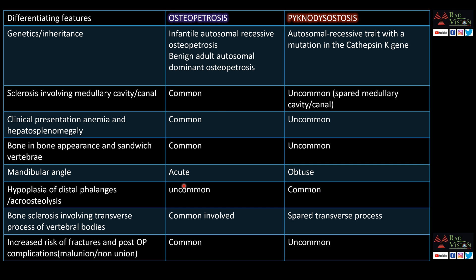Hypoplasia of the distal phalanges or acro-osteolysis is commonly seen in pycnodysostosis but not in osteopetrosis. Bony sclerosis involving the transverse processes of vertebral bodies is common in osteopetrosis, while transverse processes are spared in pycnodysostosis. Increased risk of fractures and post-operative complications are common in osteopetrosis, less so in pycnodysostosis.